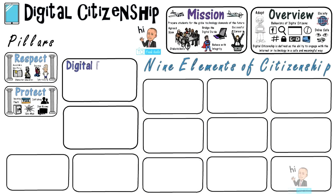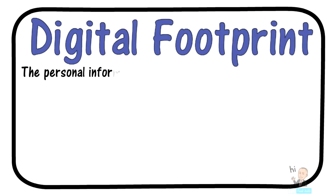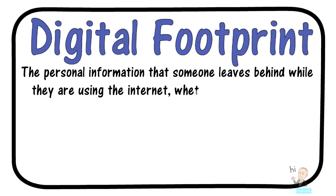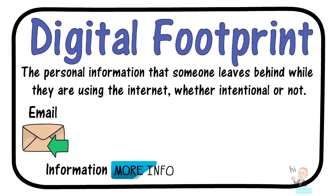The next topic is a digital footprint. A digital footprint is the personal information that someone leaves behind while they are using the internet, whether intentional or not. For example, a digital footprint includes the emails that have been sent between you and another person. Oftentimes, emails are saved and they can be used against someone. Footprints also include the information that you purposefully leave behind on the internet, whether in a Facebook biography. A person's search history is actually a trail of data that you're leaving behind.